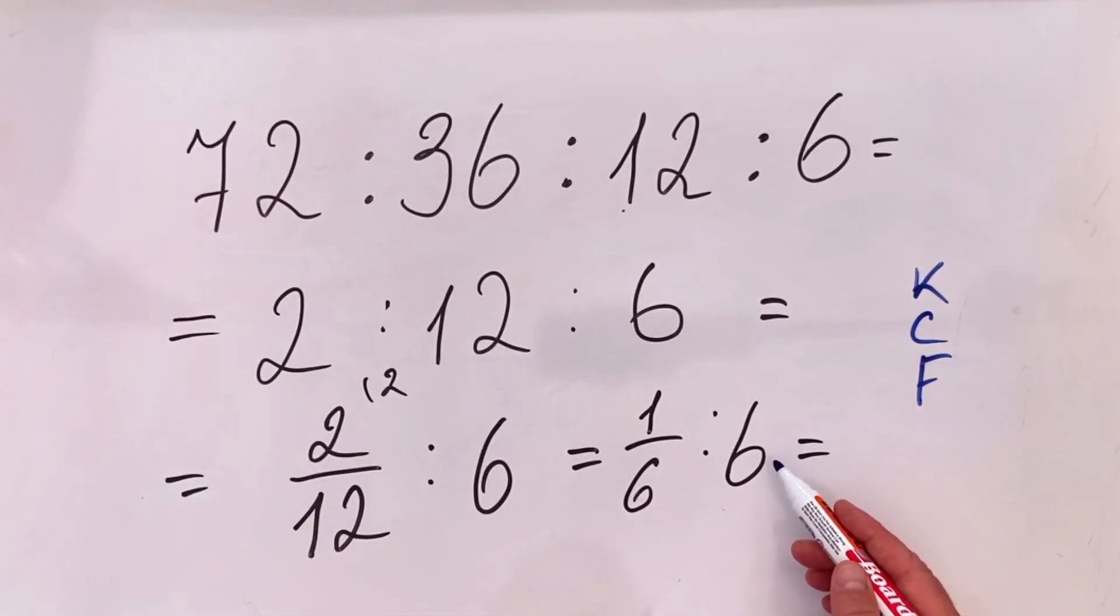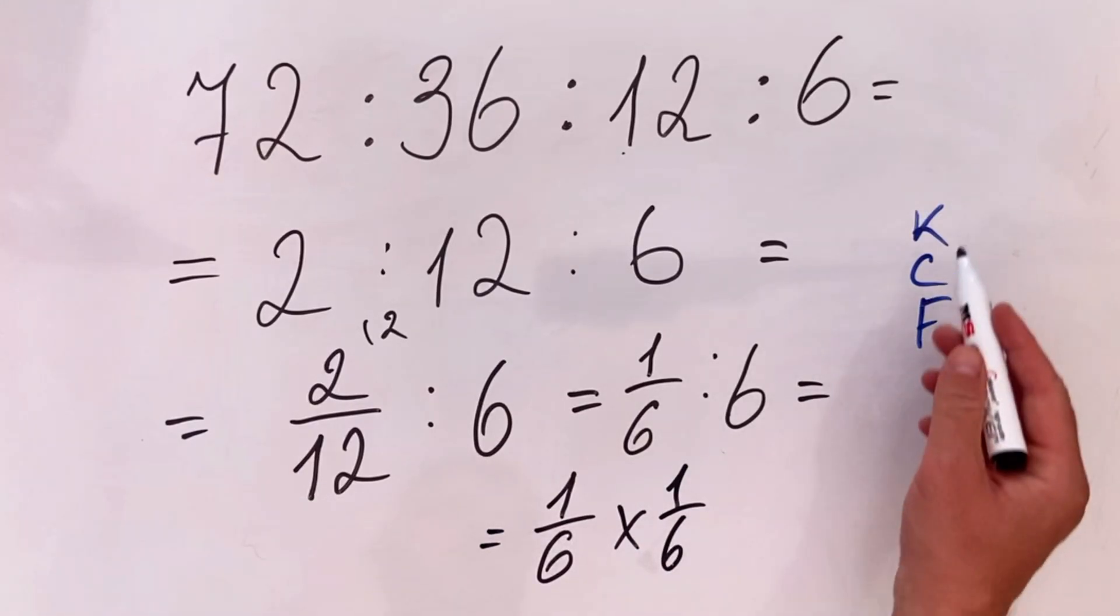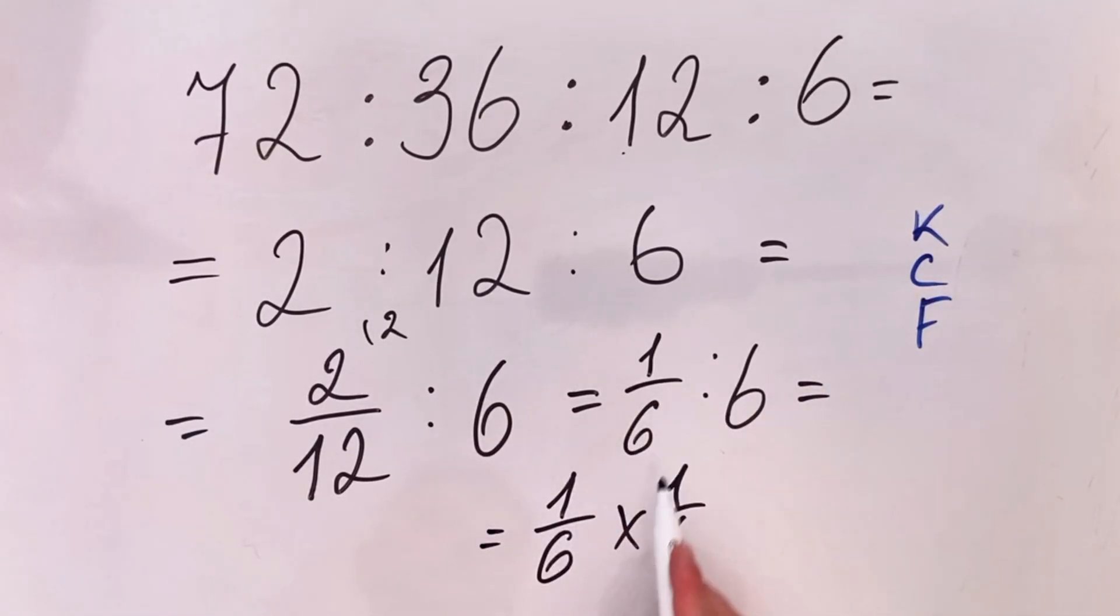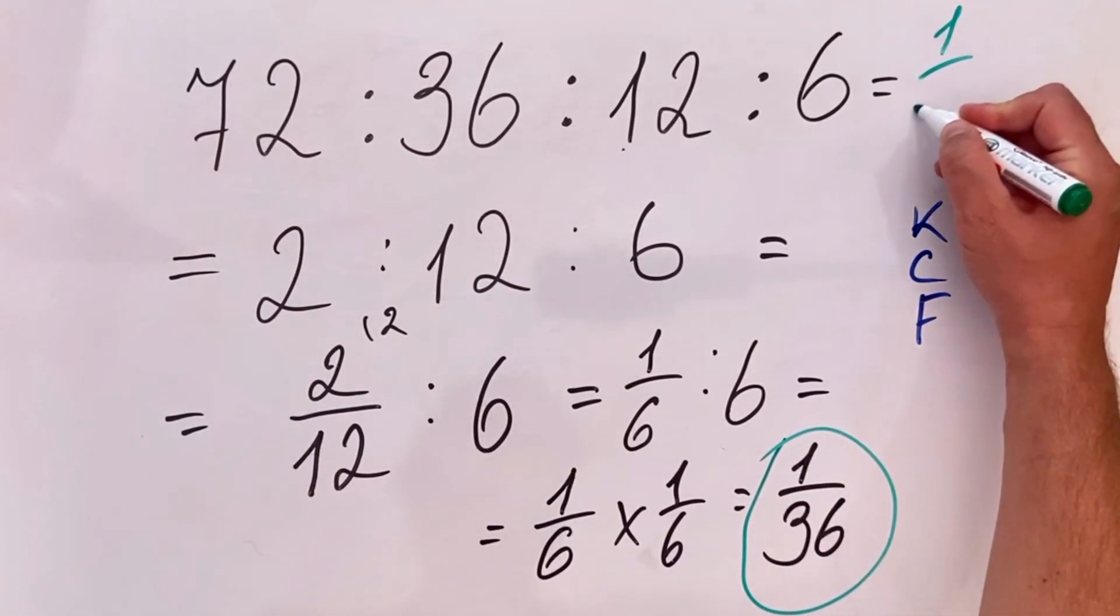In this case we have 6, we need to flip it to 1 over 6. So 1 over 6 multiplied by 1 over 6. Remember: we keep the first, change the sign, and flip the second. The solution is 1 over 36, so the correct answer is 1 over 36.